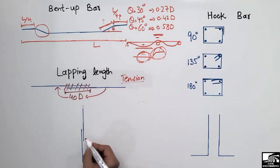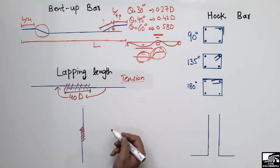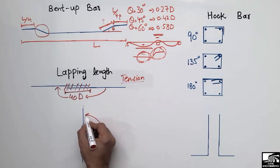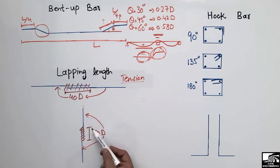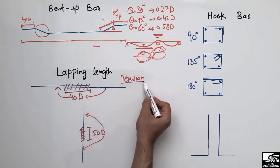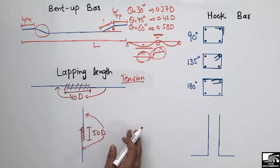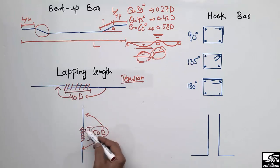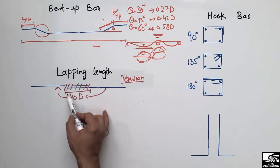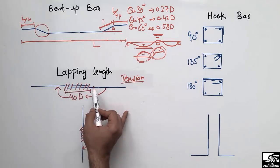For compressive members such as columns and piers, the overlapping length should be equal to 50d, where d is the diameter of the steel bars. This value is higher than for tension members because compressive members exhibit brittle behavior, so we use a larger overlap to safely transfer load from the upper structural member to the lower one. Beams and slabs use a smaller overlap as they are less critical.